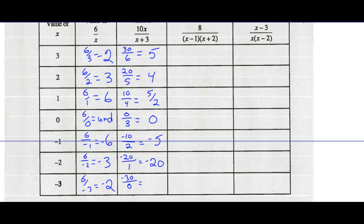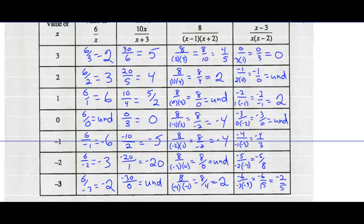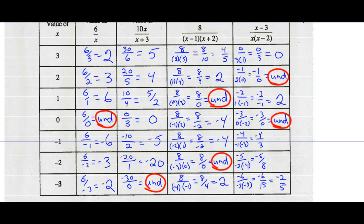I've done the first two columns. I'd like you to pause this recording and complete the next two columns on your own, then restart it. If you completed the last two columns, here's what it should look like. We notice that we have a denominator of 0, we get undefined. In the last column, denominator of 0 gives undefined in two situations. We only had one undefined in the first column, one undefined in the second column. In the last two columns, we had two situations when the term was undefined — when that denominator became 0.